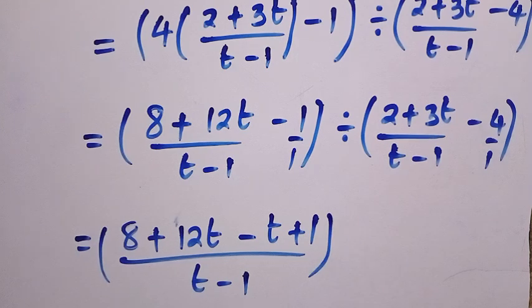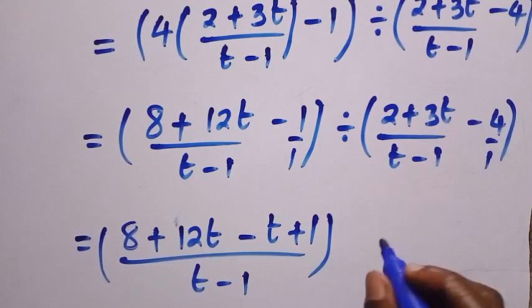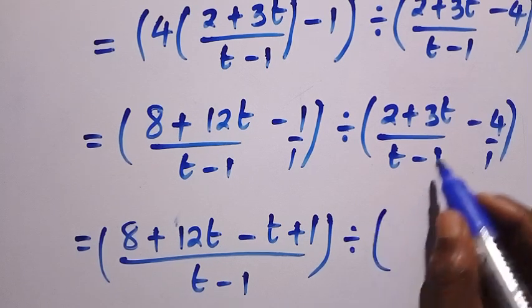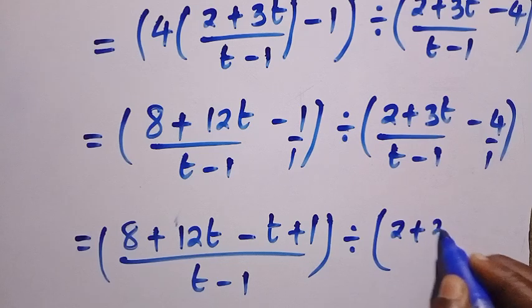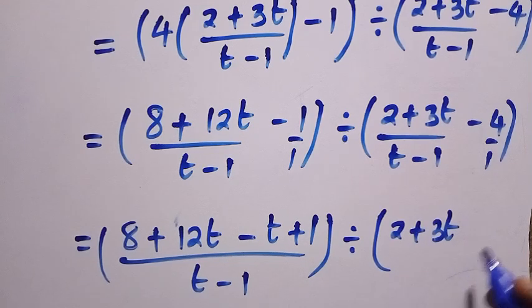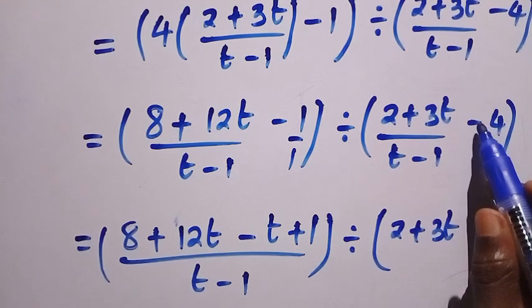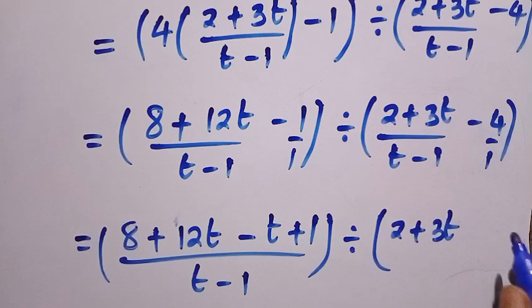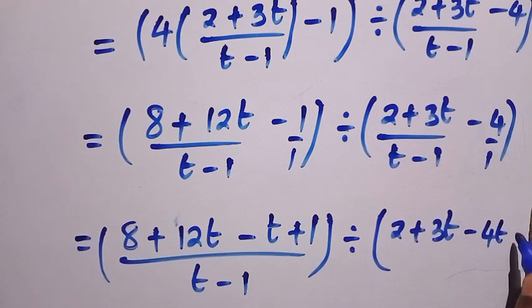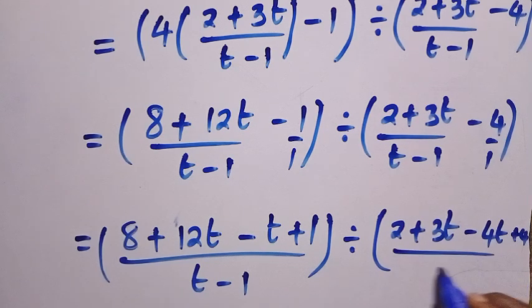All of that in brackets, then divided by the denominator. Applying the same approach: 2 plus 3t, and we multiply minus 4 by t minus 1, giving minus 4t plus 4, divided by t minus 1.